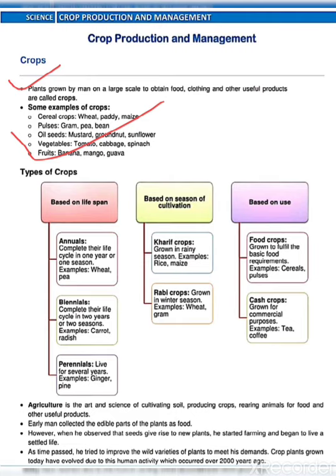Now, types of crops. There are three types of crops mainly — based on life span, based on season, and based on uses. Here we will talk about based on season of cultivation. There are two types: Kharif crops, which are grown in the rainy season, for example rice and maize; and Rabi crops, which are grown in winter season, for example wheat and grams.